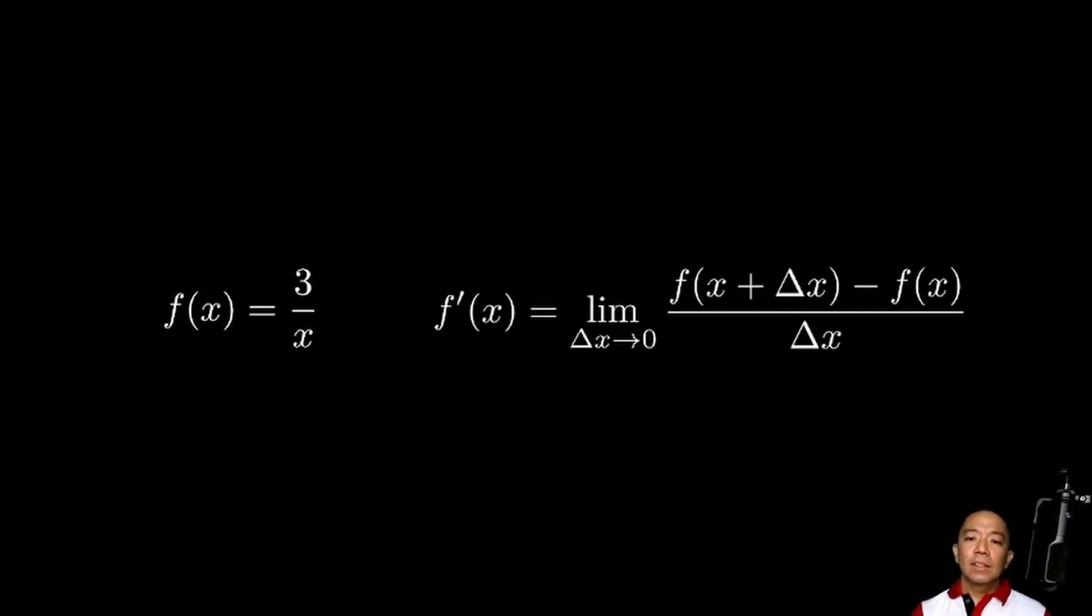I-verify natin yung result natin. So, hahanapin natin yung derivative ni f of x equals 3 over x using the definition. The definition of the derivative is that this is the limit as delta x approaches 0 of f of x plus delta x minus f of x all over delta x. Let's start by looking at the numerator. f of x plus delta x saka f of x. So, we will substitute yung f of x natin dun sa value sa taas.